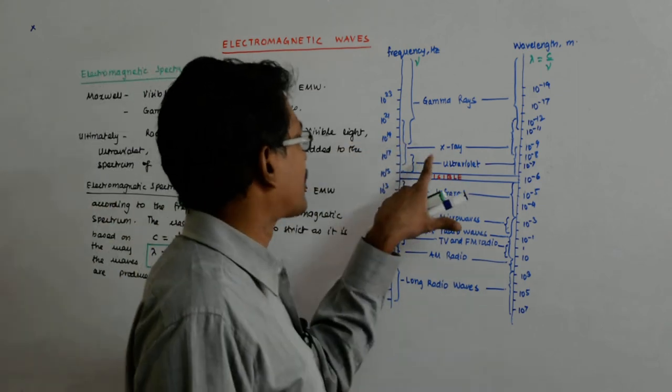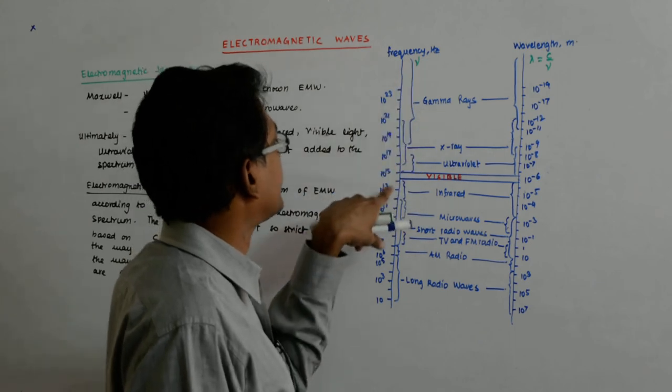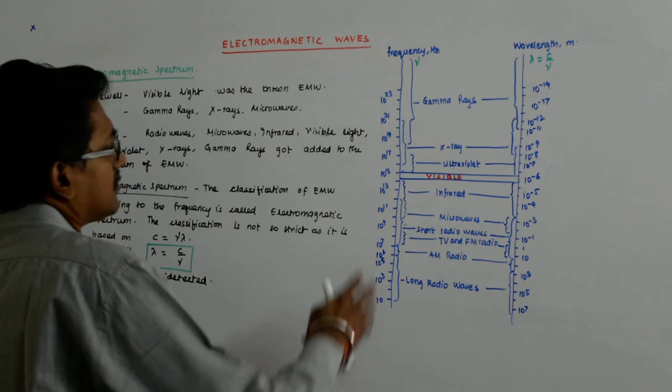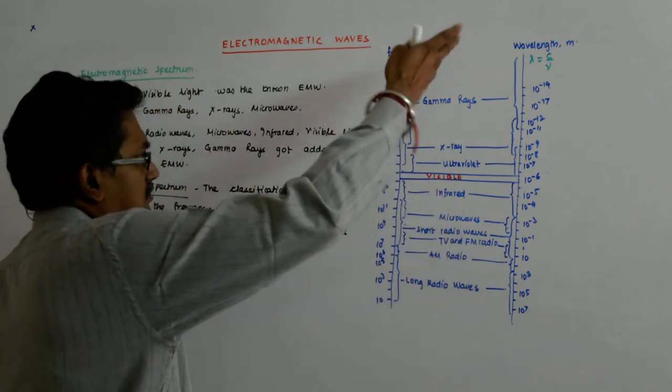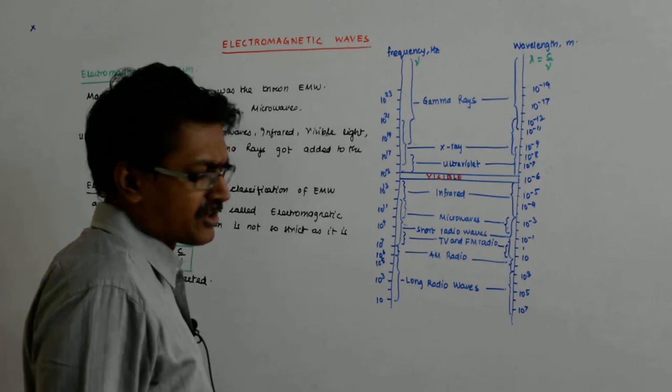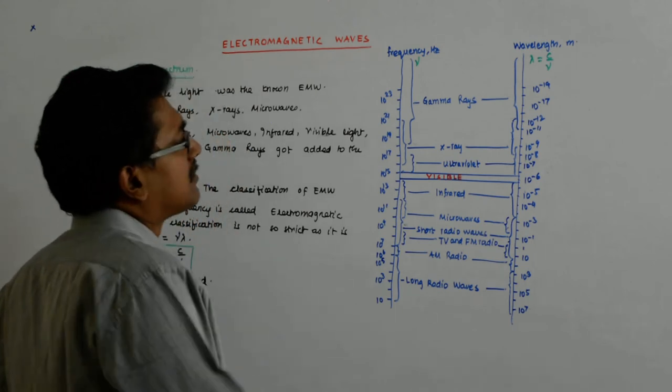Above that is x-ray and ultraviolet and x-ray and gamma rays, you see they overlap. Ultraviolet moves into the region of x-ray. Gamma rays and x-rays, they also overlap. X-rays and ultraviolet overlap.